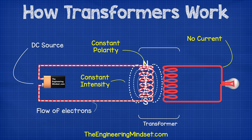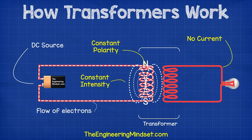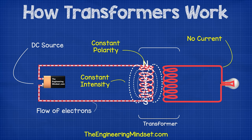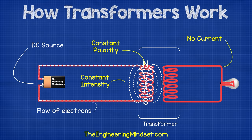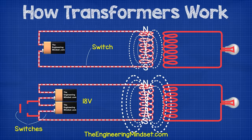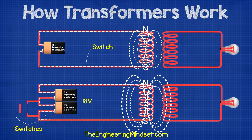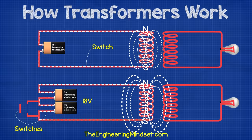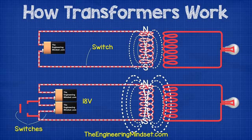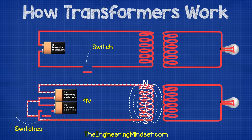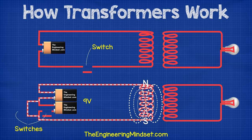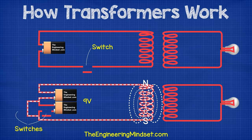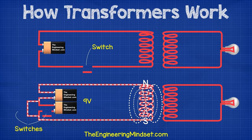Electromotive force does not occur when we pass DC current through the primary coil, because the magnetic field is constant, so the electrons are not being forced to move. The only time it will cause EMF is very briefly when the primary circuit is opened and closed, or when the voltage is increased or decreased, because these actions result in a change to the magnetic field. Therefore, we use alternating current as this change occurs constantly.